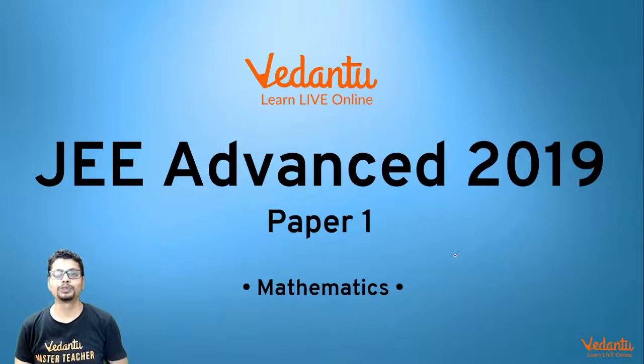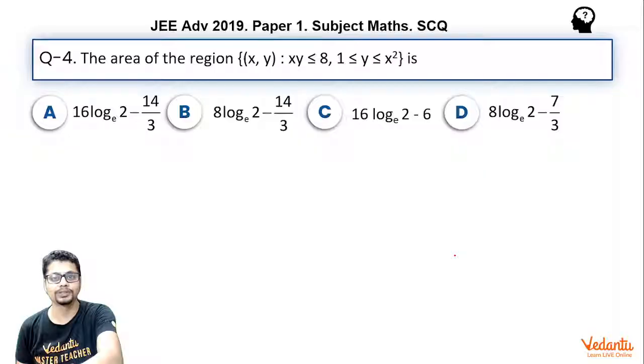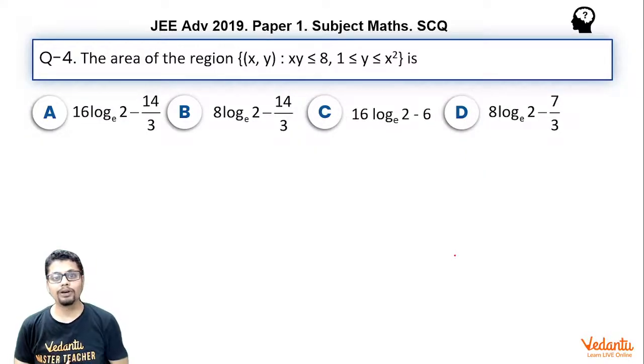We are discussing JEE Advanced 2019 Paper 1 Mathematics, and the question for this video is this: The area of the region having all the points (x, y) such that xy is less than or equal to 8 and y is greater than or equal to 1 less than or equal to x² is. There are four options. This is a single correct type question. Let's solve it.